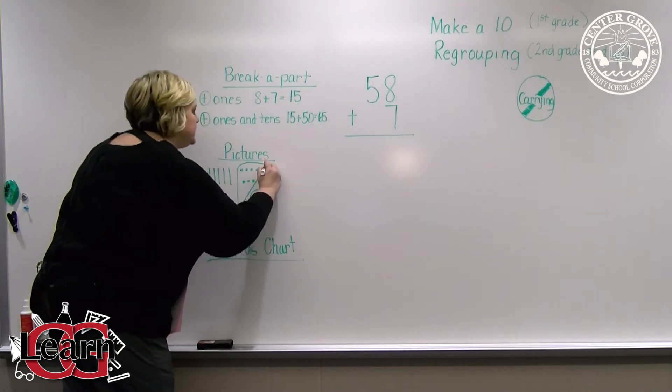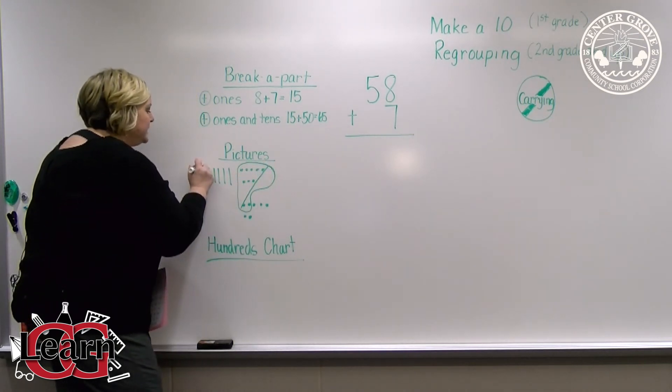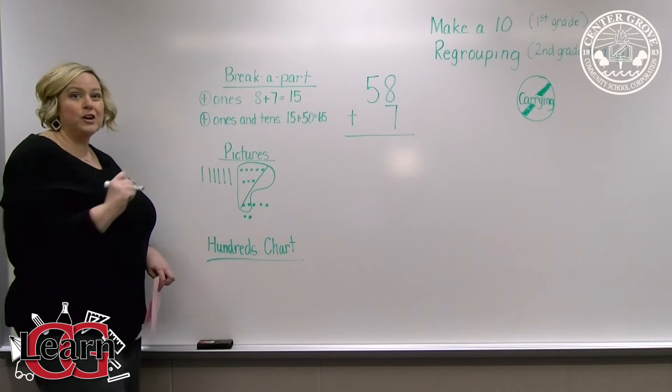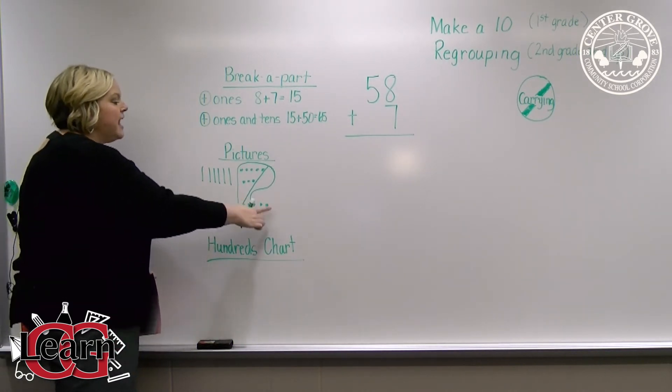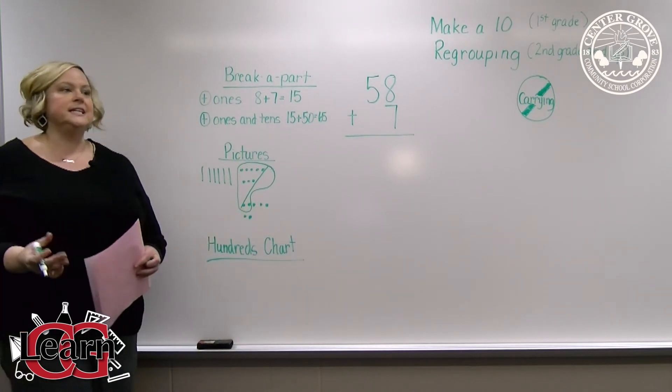I can now cross that out and put my 10 over here. And then you can look at my picture now and see that I have six tens and five ones, which is 65.